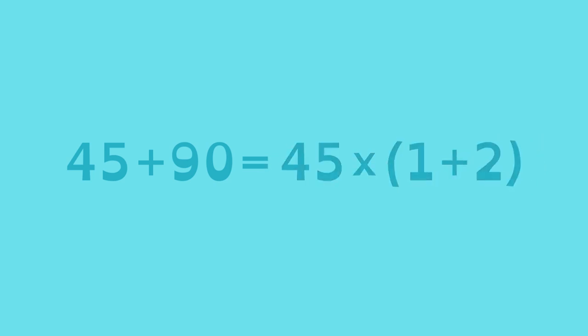One way to tell that you have the greatest common factor is that the numbers in the parentheses have no common factor. One doesn't count as the greatest common factor, since it's the common factor of all numbers.